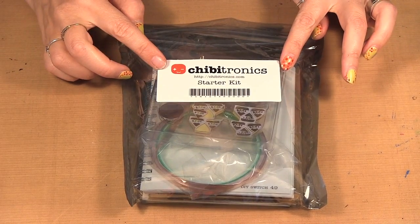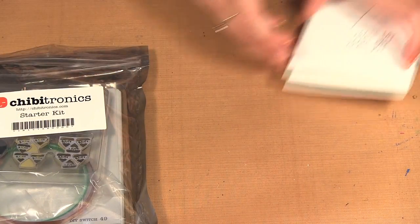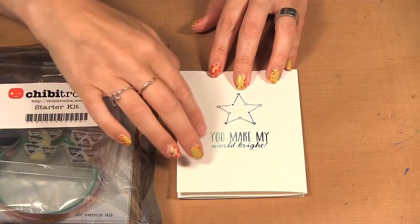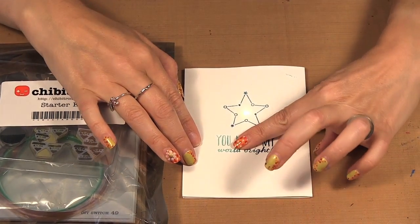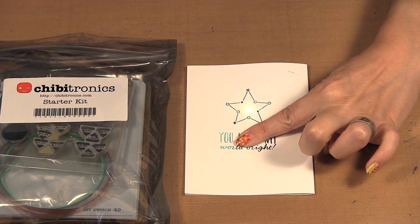Today I am showing you the Chibitronics Starter Kit and what this kit does is it allows you to add light to your project. So we have this card and I press down and you can see there's a light there in the middle of my card.